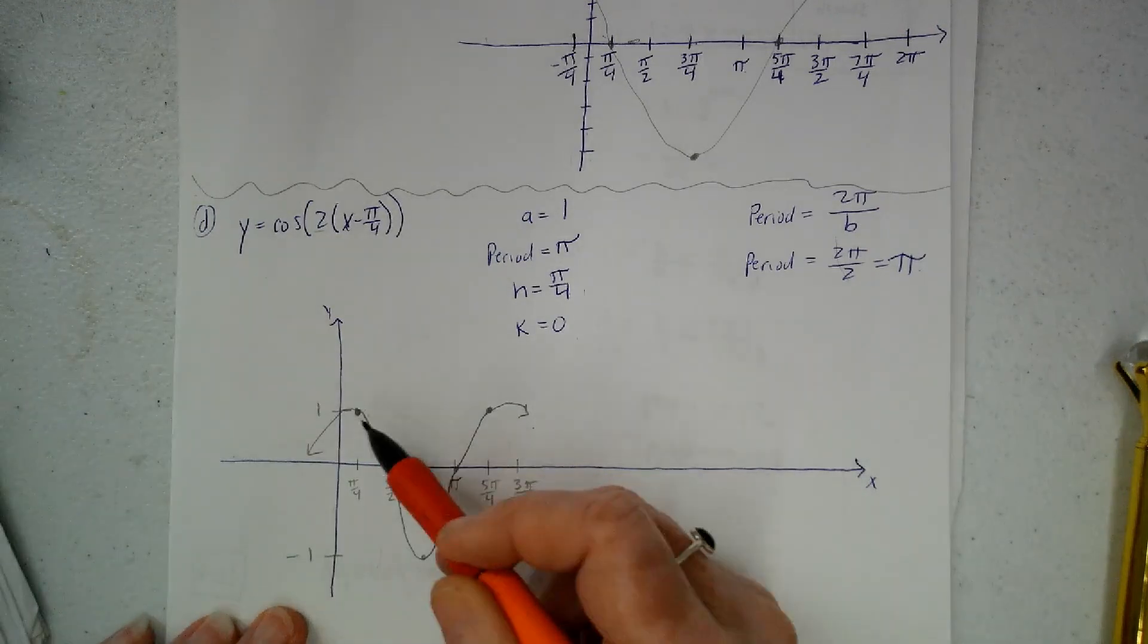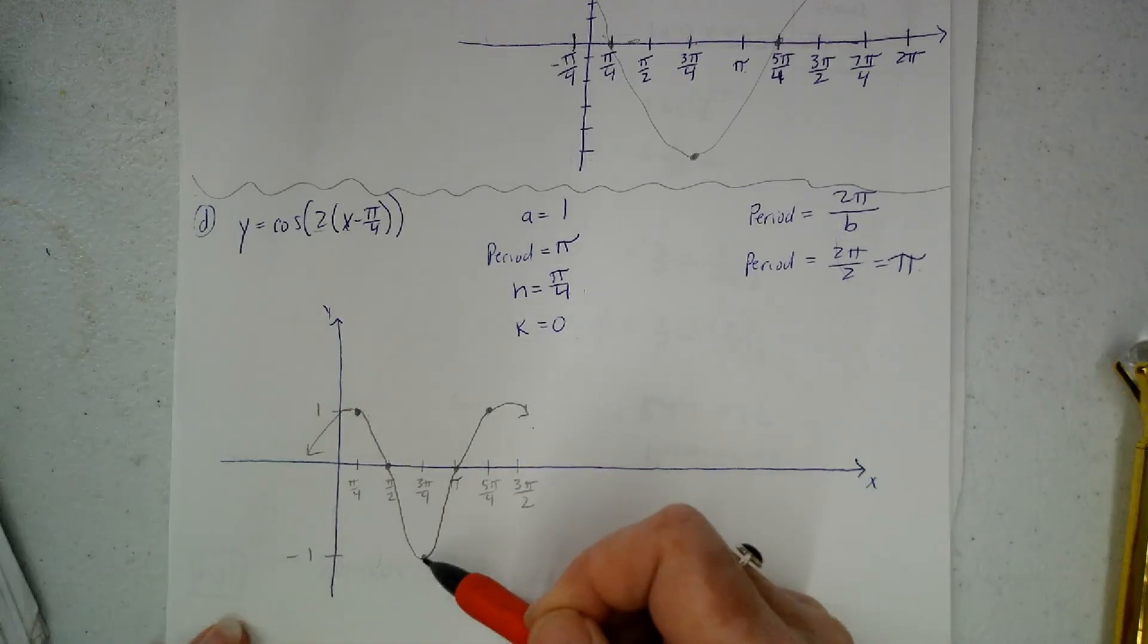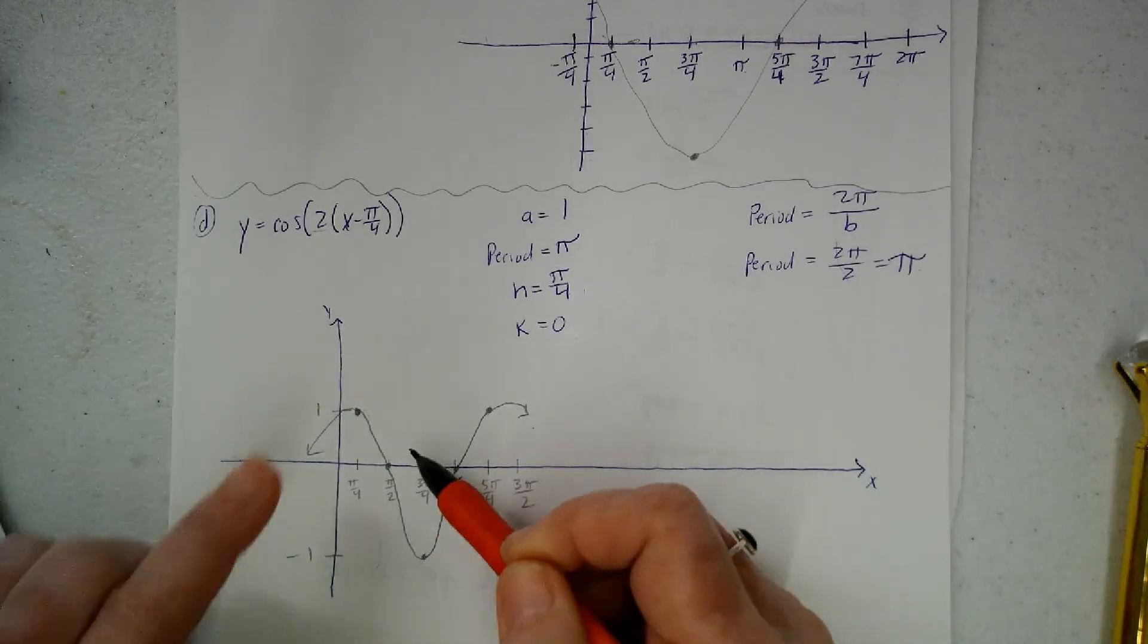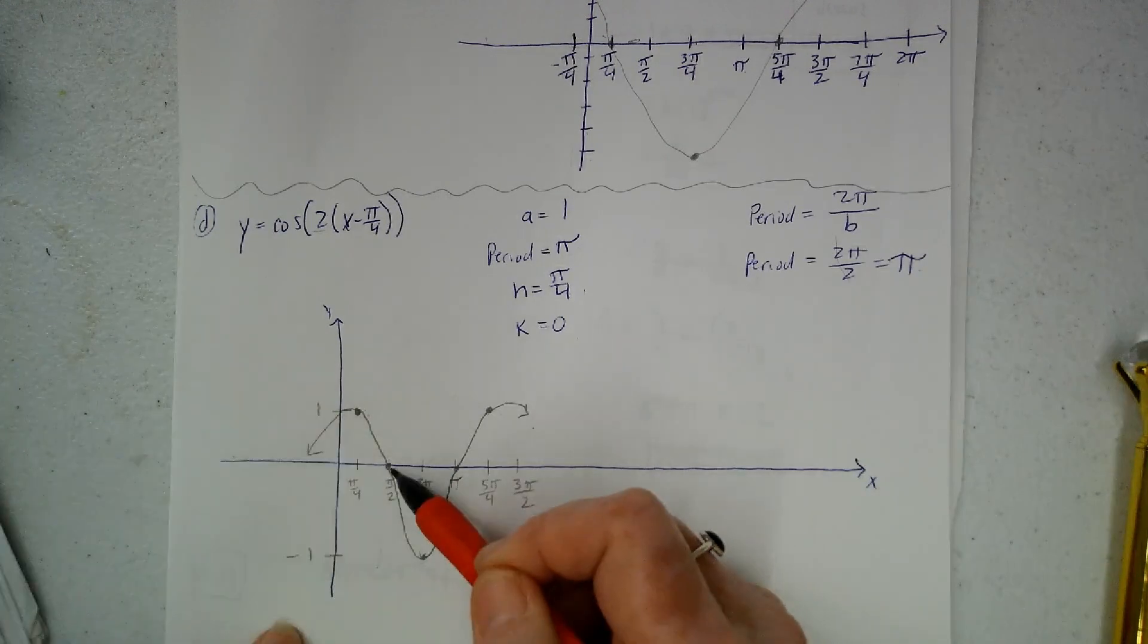And then I find the exact middle in between these two. That's 3π over 4. That gives me my third point. And then I find the exact middle of these two and these two.